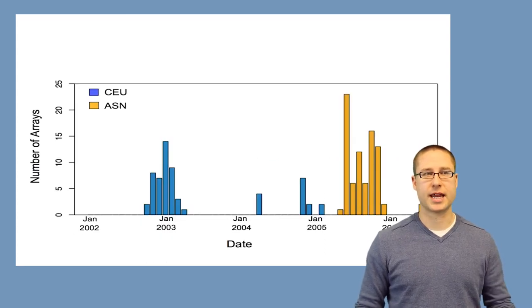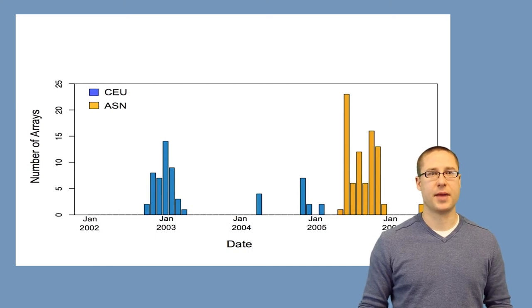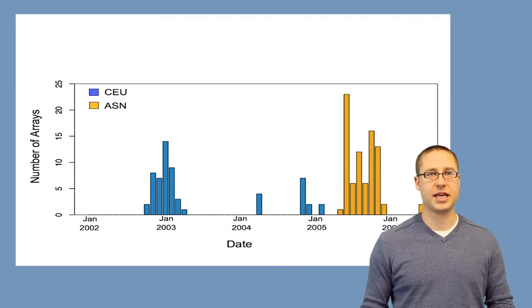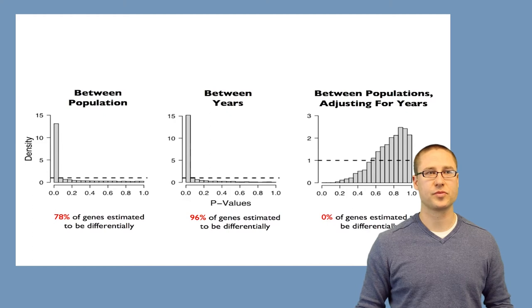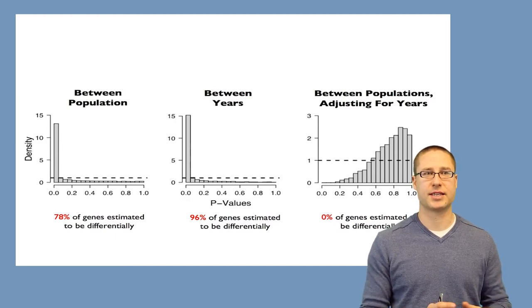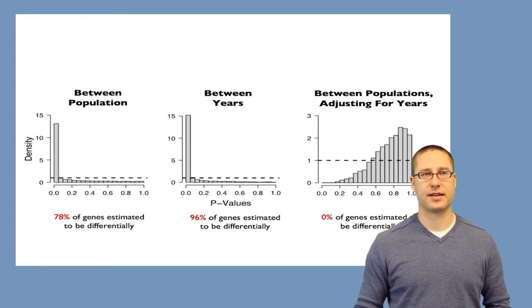It turns out that if you go back and look at when the data were collected, all of the samples from Europeans were collected in 2003, 2004, and 2005, whereas all of the samples from Asians were collected later, in 2006. There's just enough overlap that you can distinguish between genes that are different because of the date and genes that are different because of the population. Between-population differences show 78% of genes differentially expressed, but differences between collection years show 96% of genes differentially expressed. And once you adjust for the fact that samples were taken in different years, all the difference between the populations goes away.